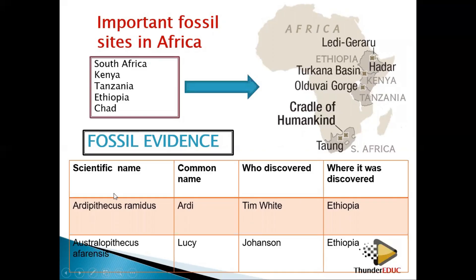The first fossil you need to understand is Ardipithecus ramidus, which we call Ardi. Who discovered it is Tim White, and where exactly — it was discovered in Ethiopia. Sometimes this one becomes the common name. When questions are asked, they might ask for a scientific name or a common name. If the question is open, you can choose whatever you want.